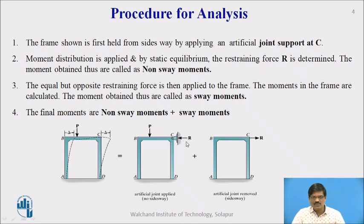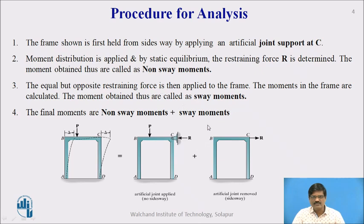Once we get this reaction, after the analysis is over for the restrained case, we can determine how much R is produced. In the second step, we apply the same force on the frame and do the moment distribution again. The equal but opposite restraining force is then applied to the frame. The moments obtained thus are called sway moments. The summation of these two gives us the final moments.